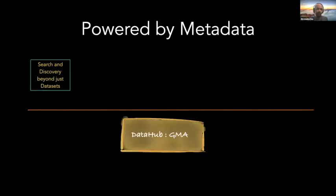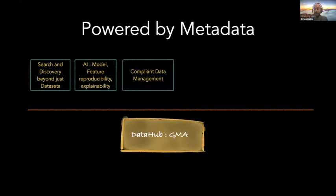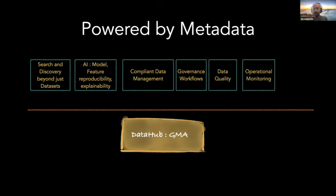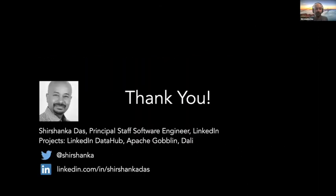I talked about three things: search and discovery, AI model and feature reproducibility, compliant data management, and governance workflows. There are actually a few more — including data quality operations monitoring — that I just ran out of time to cover. We're really just getting started with what we can do for the whole company using this one metadata platform. Thank you for listening, and we'll take questions later.